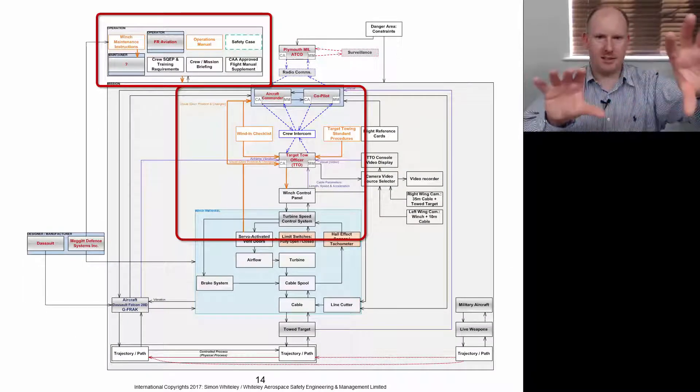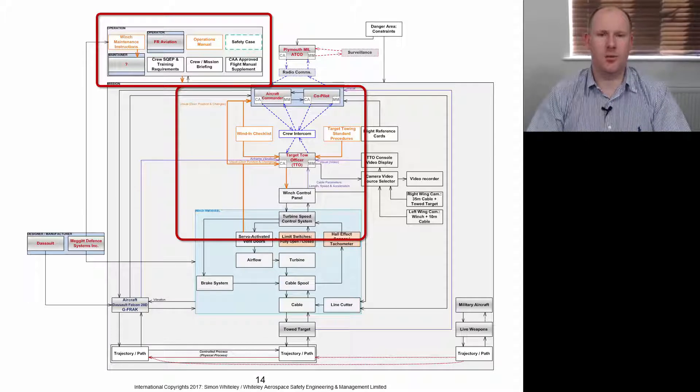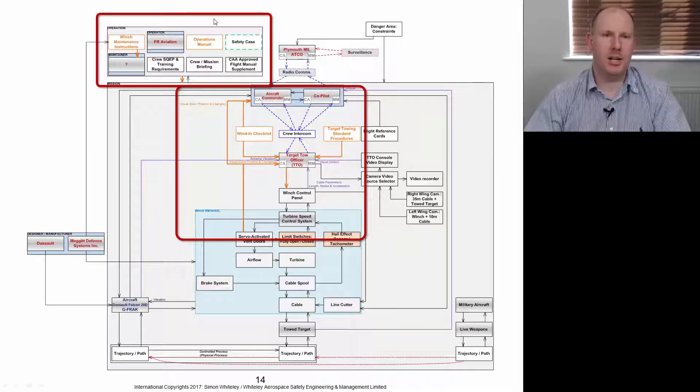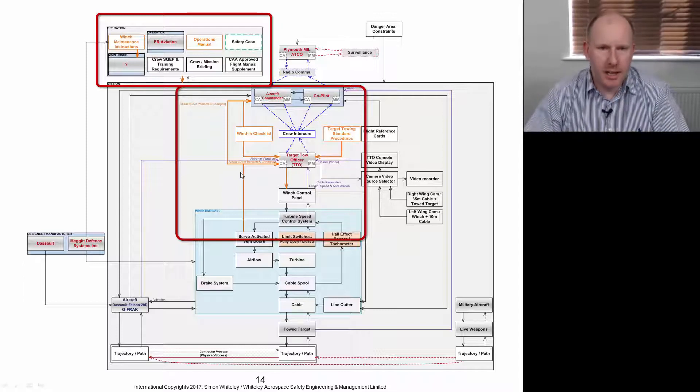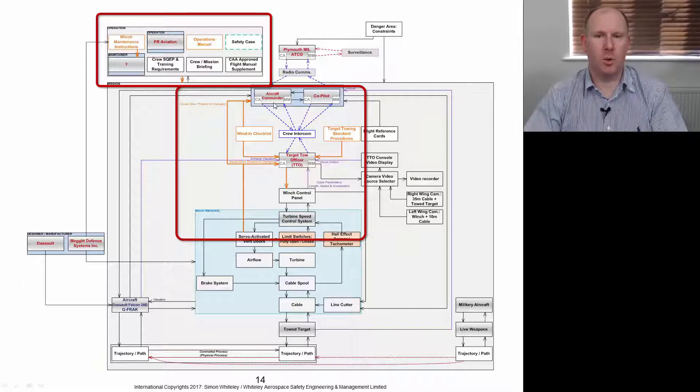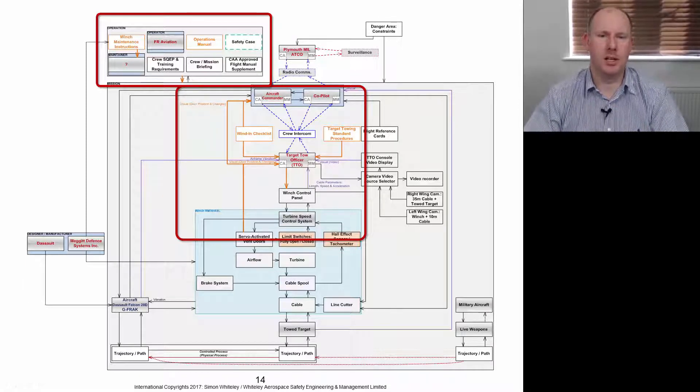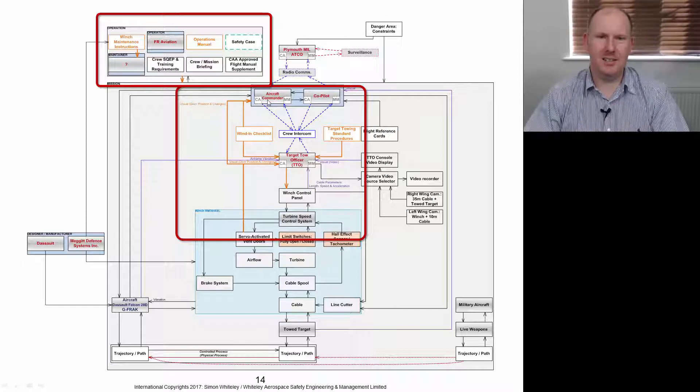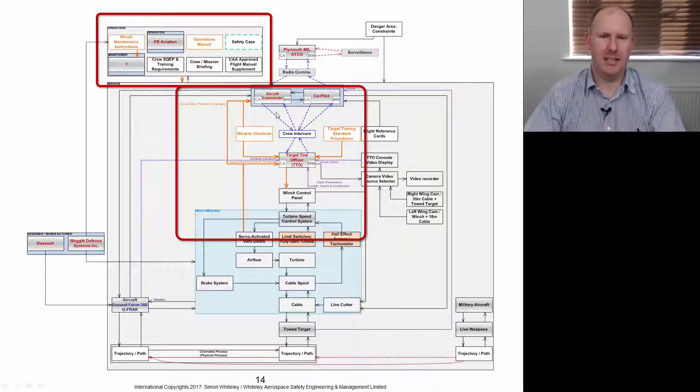That effectively affects these parts of the control structure: changes to the maintenance instructions, operations manual, changing the checklist and the standard procedures. But it also introduces this new feedback loop from the vent doors through to the aircrew or one of the pilots, depending on which side of the aircraft, which winch they're using. All that's done really is give people more feedback. It hasn't really changed the possibility that this outcome could occur again.